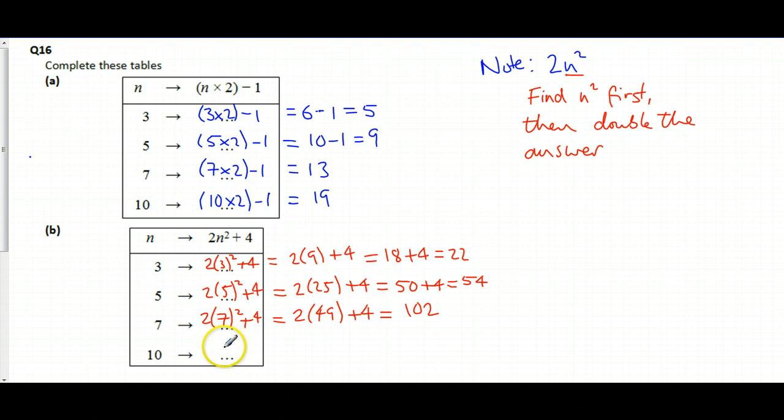And 10, 2 lots of 10 squared, add on 4. Well, I know that 10 squared is 100, or 10 times 10 is, 10 by itself, is 100, so that makes 200 plus 4, makes 204. This one's quite tricky, so go back over it and check it if you need to.